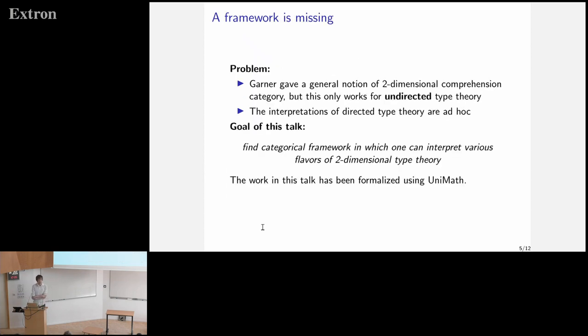So what is the basic problem we find with this work is that we think it is too ad hoc. If you look at them, a unifying framework is missing. They are trying to look at models, but they don't try to define a general notion of model. They don't try to define a general framework in which one can consider different kinds of models and different kinds of properties you might want from these models. And what we want to do is we want to develop such a framework, which also unites both directed and undirected versions of two-dimensional type theory. And this has been formalized in UniMath.